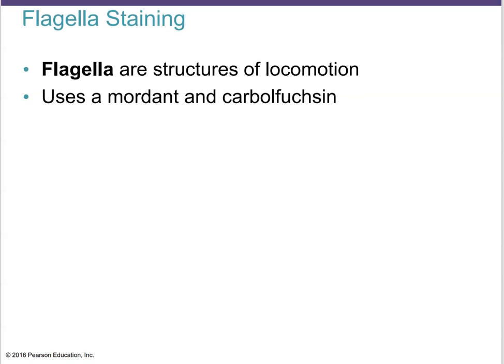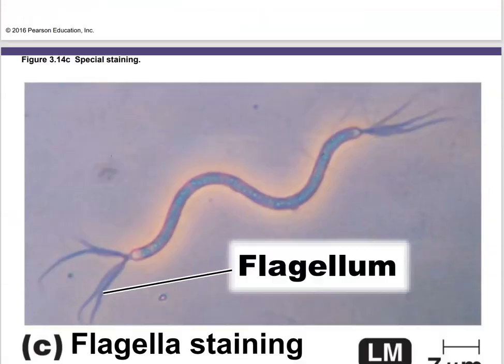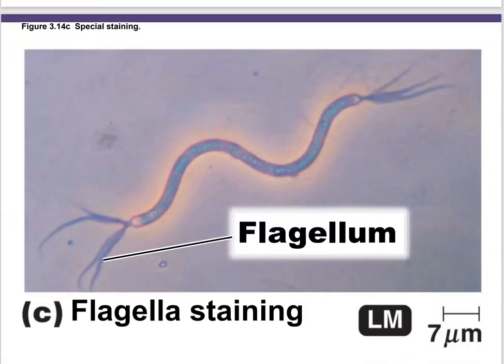The flagella stain is used to visualize flagella when they are present. Typically a mordant and carbolfuchsin are used. The result shows the flagella clearly stained — some bacteria have flagella on both ends, which can be seen beautifully with this stain.